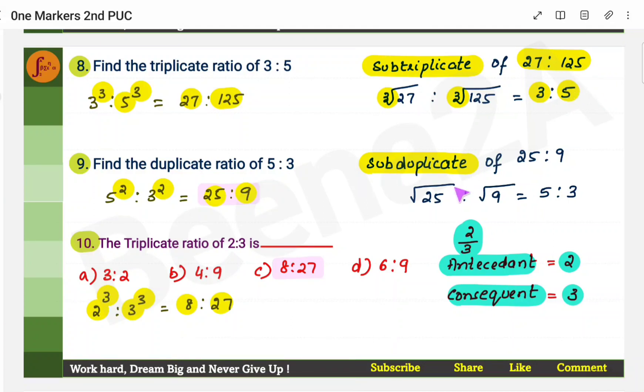Now what is sub-duplicate? Sub-duplicate means square root. Square root. Here it was cube root. Here it is square root. What is square root of 25? It's 5. What is square root of 9? It's 3.